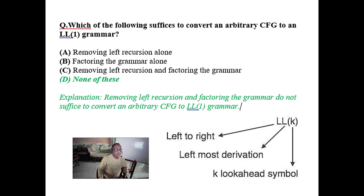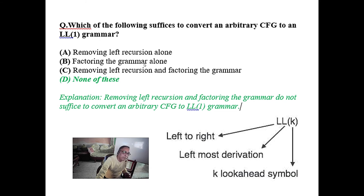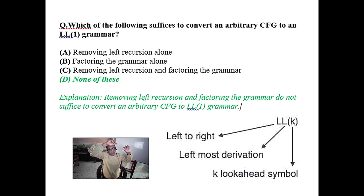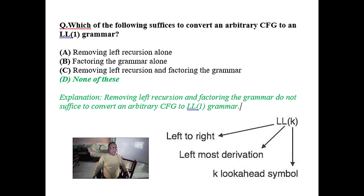Which of the following suffices to convert an arbitrary context-free grammar to LL(1) grammar? Removing left recursion is one step, and factoring the grammar is also one step. Removing left recursion and factoring together is a vital step, but that does not guarantee the grammar is LL(1). The answer is none of the above — it does not guarantee LL(1), because ultimately you have to create a parsing table and verify that for every variable on the left-hand side and every terminal at the top, there is one and only one entry. You also check if any variable is nullable, and if so, FIRST and FOLLOW intersection must be empty.